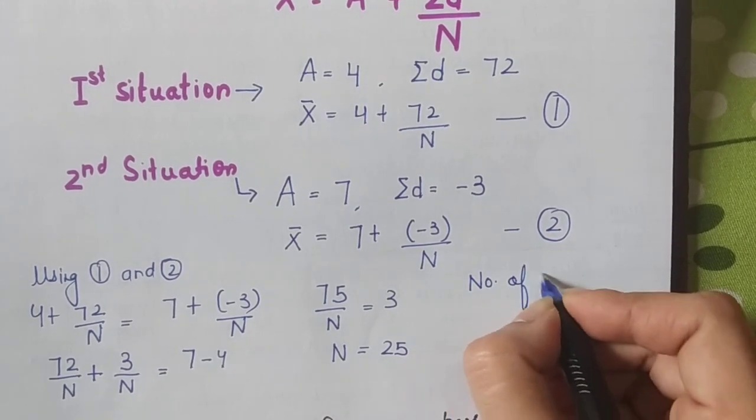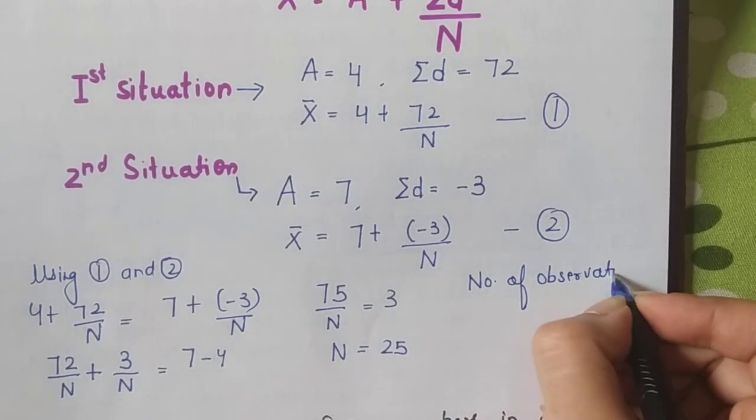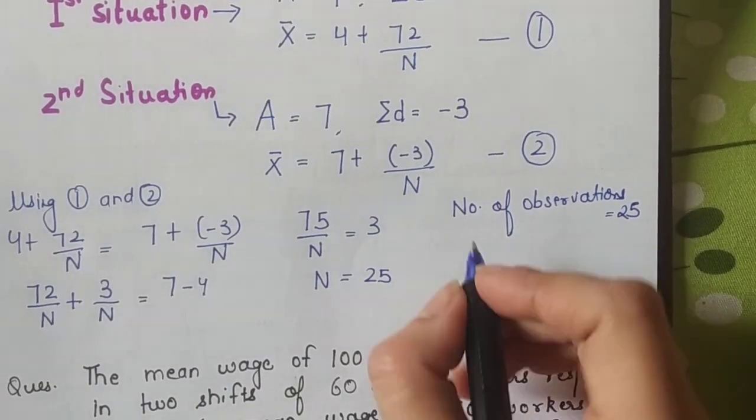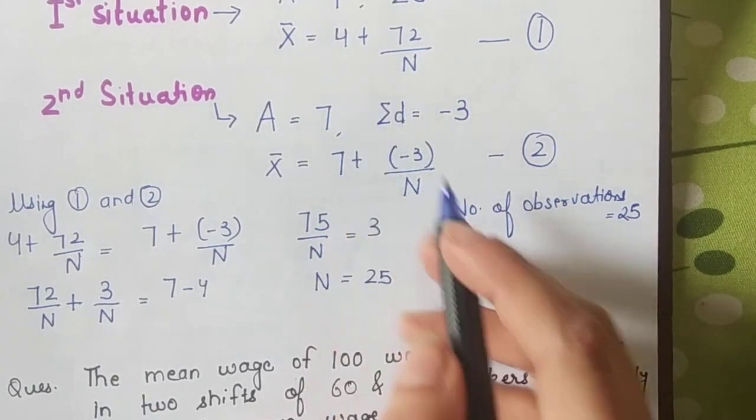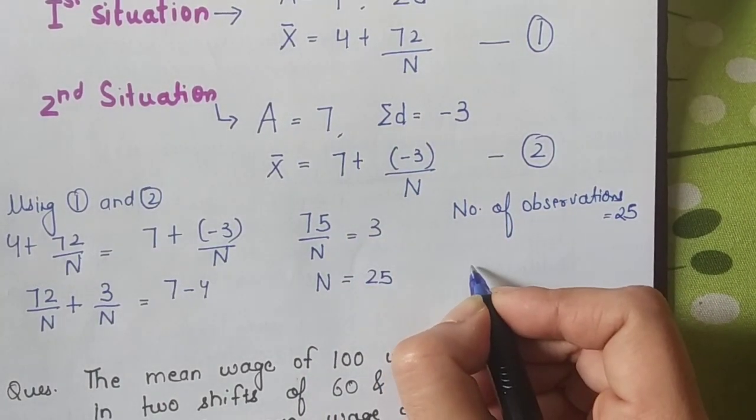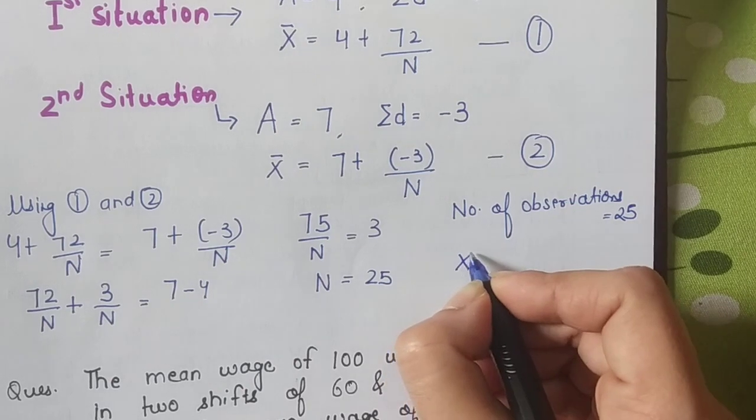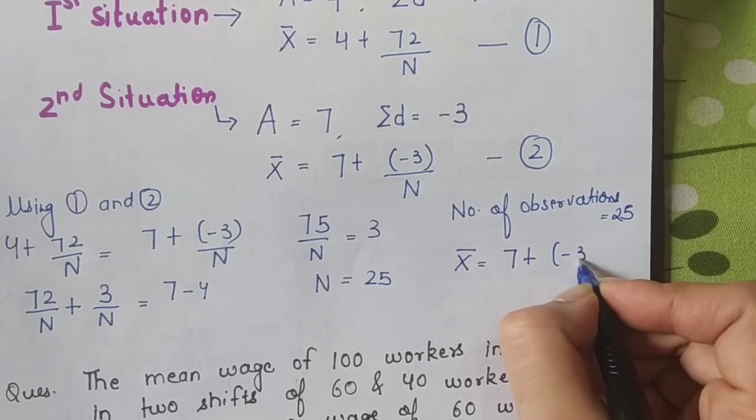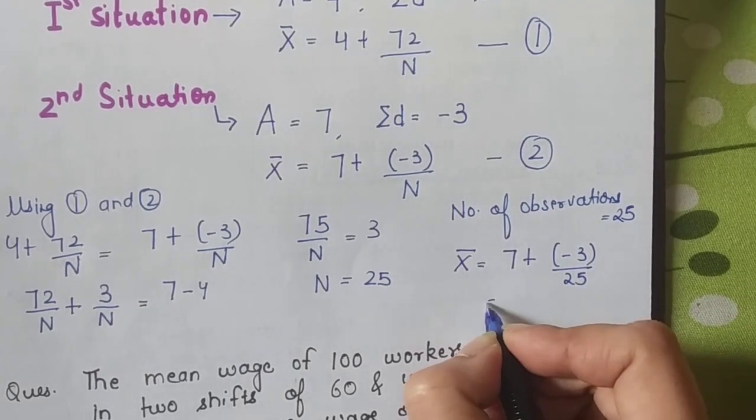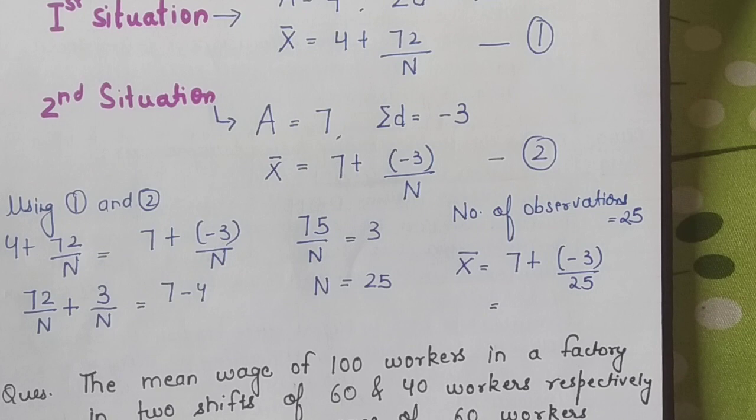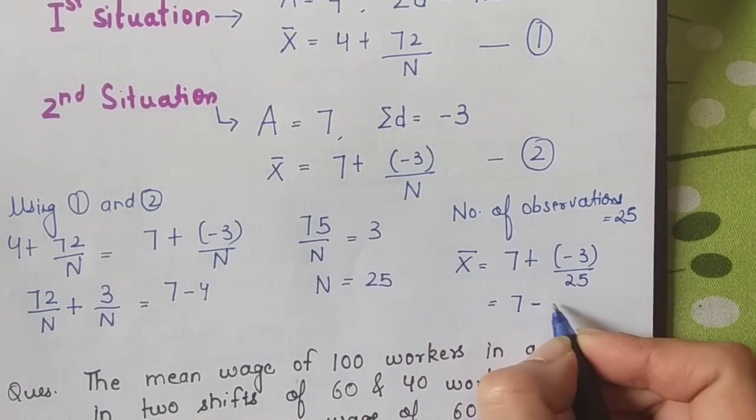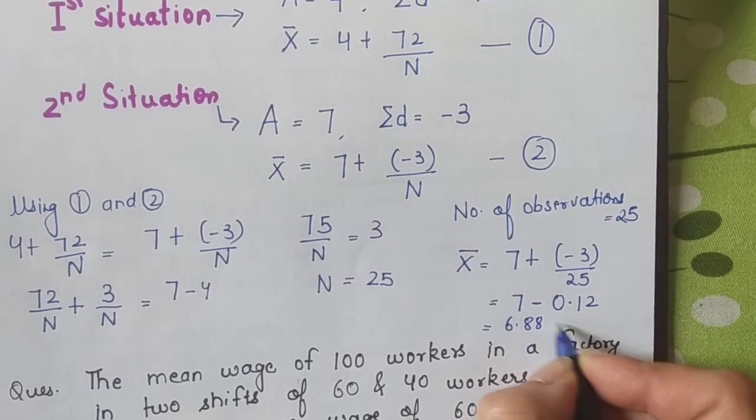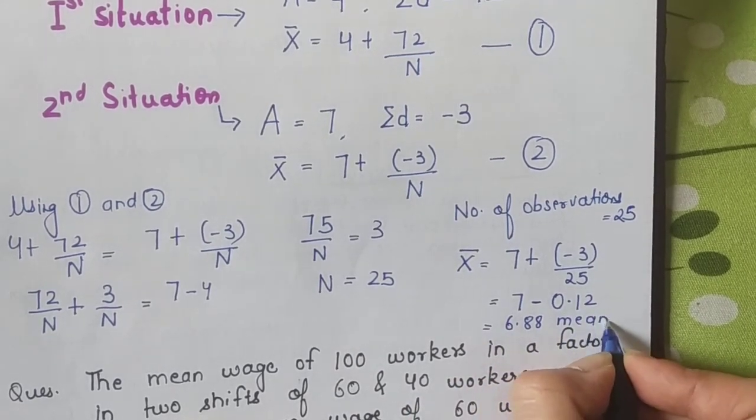So the question was asking number of observations. Number of observations is 25. Also, we were asked to find the mean. To find mean is very easy. You can use either of the two situations. Suppose I used the second equation: 7 + (-3)/25 = 7 - 0.12 = 6.88 is the mean value that was being asked in the question.